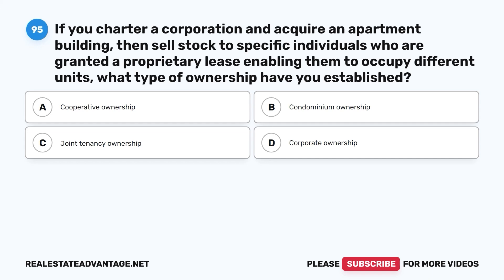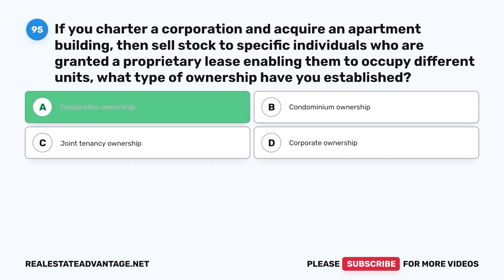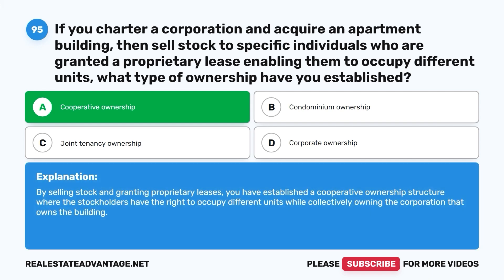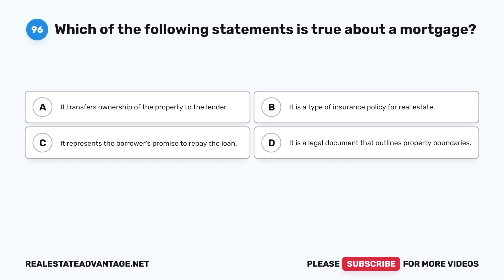Question 95: If you charter a corporation and acquire an apartment building, then sell stock to specific individuals who are granted a proprietary lease enabling them to occupy different units, what type of ownership have you established? A. Cooperative ownership. B. Condominium ownership. C. Joint tenancy ownership. D. Corporate ownership. The correct answer is A, cooperative ownership. By selling stock and granting proprietary leases, you have established a cooperative ownership structure where the stockholders have the right to occupy different units while collectively owning the corporation that owns the building.